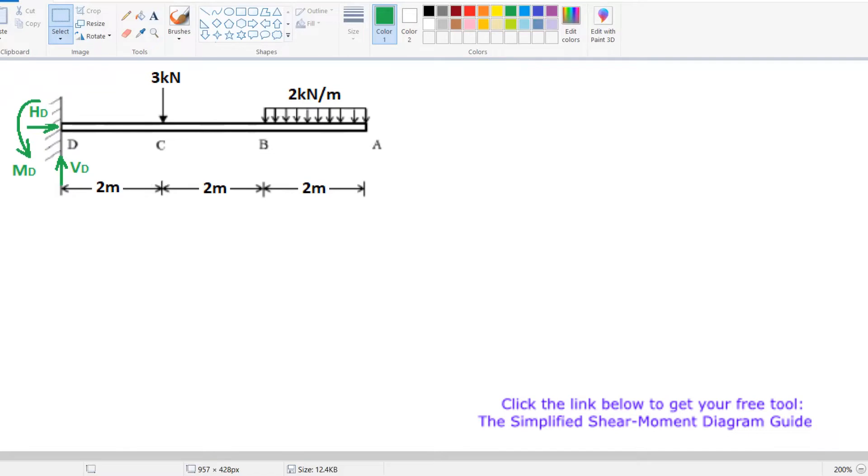We have a cantilevered beam with a point load of 3 kN and a uniformly distributed load of 2 kN per meter.